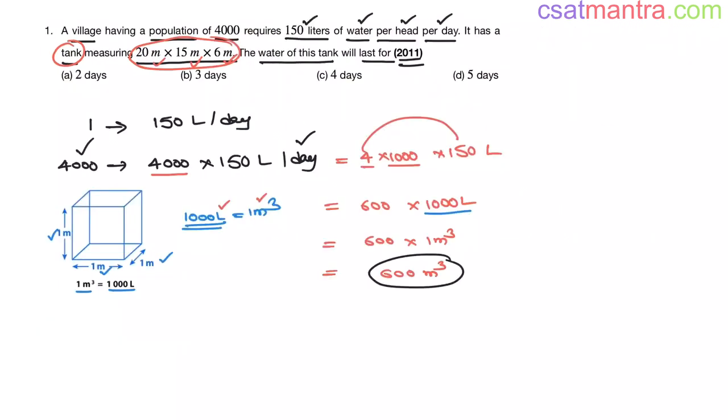Now, tank volume: 20 meters into 15 meters into 6 meter. This is 20 meters into 15 is 90 meter square. Meter into meter is meter square. So this is 1800 meter cube.